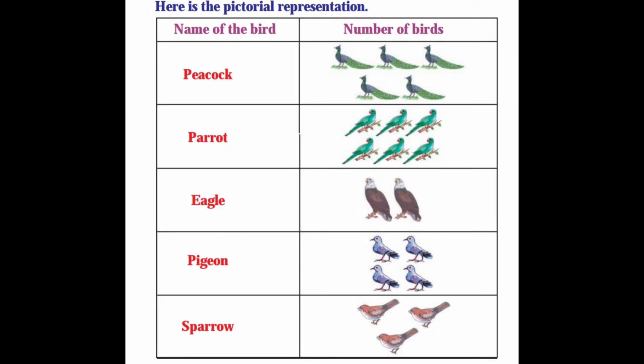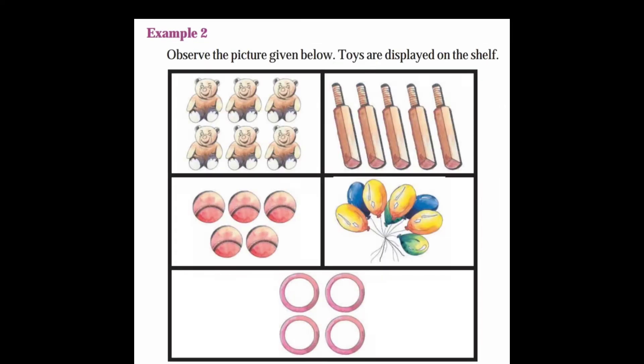Now let's look at another pictograph. Toys are displayed on the shelf. Teddies is 6, Bat is 5, Ball is 5, Balloons is 8, Rings is 4. Let's make a tally and tabular column for this data.